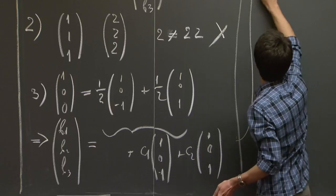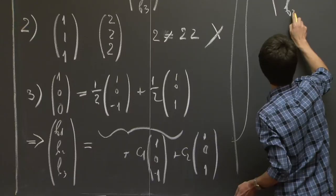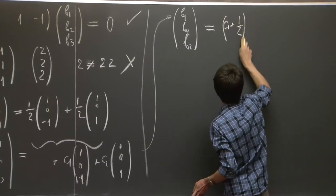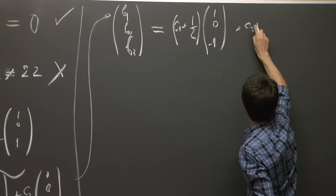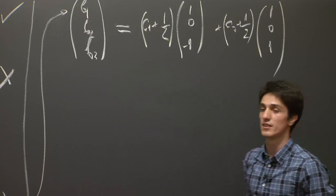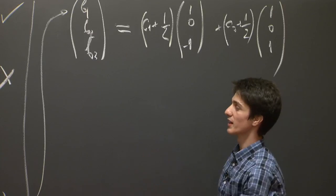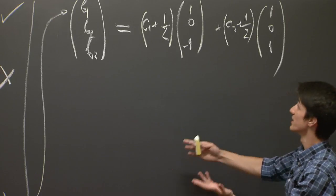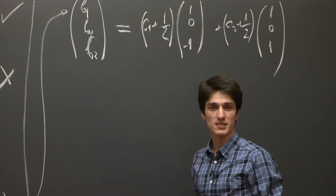So continuing here, (b₁, b₂, b₃) is precisely (c₁ + ½)(1, 0, -1) plus (c₂ + ½)(1, 0, 1). So indeed, the points b₁, b₂, and b₃ are described by the linear span of (1, 0, -1) and (1, 0, 1). So it is a vector subspace itself.